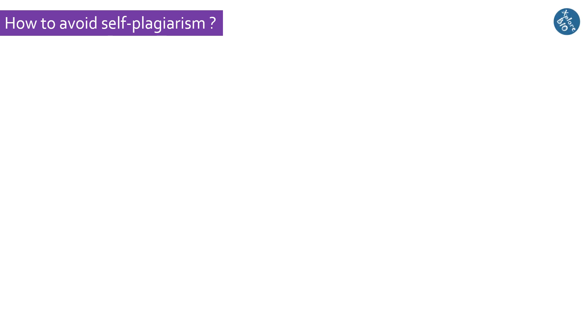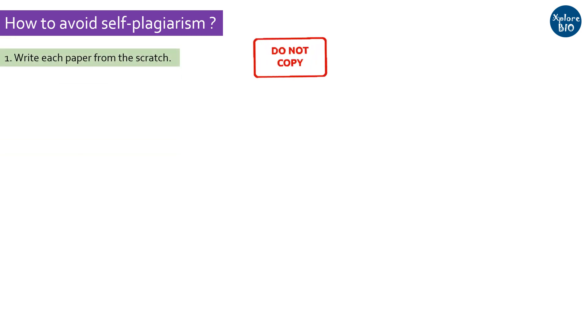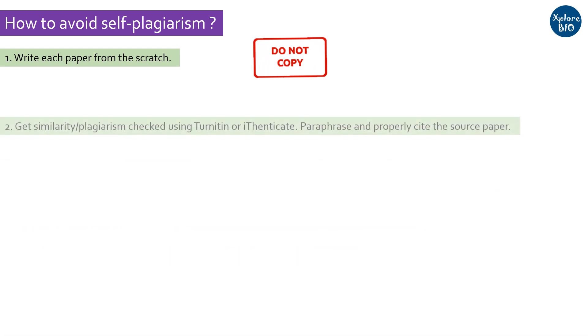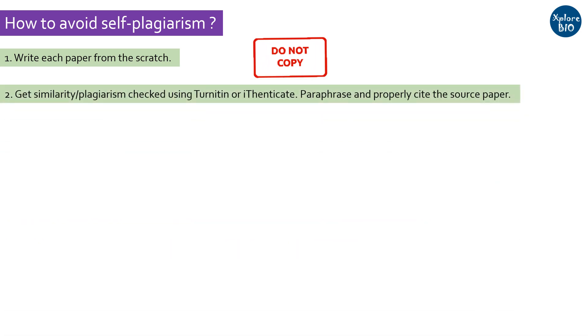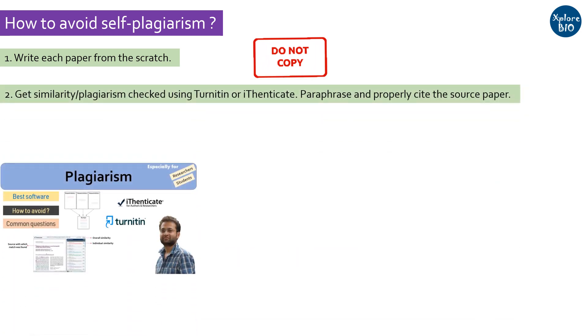Self-plagiarism may be intentional or unintentional. Here are two simple yet effective ways to avoid it. Number one: always try to write each paper fresh. Number two: get your manuscript checked for similarity using software like Turnitin or Authenticate. If high similarity is found with previously published work, you should paraphrase it and provide proper citation to it.